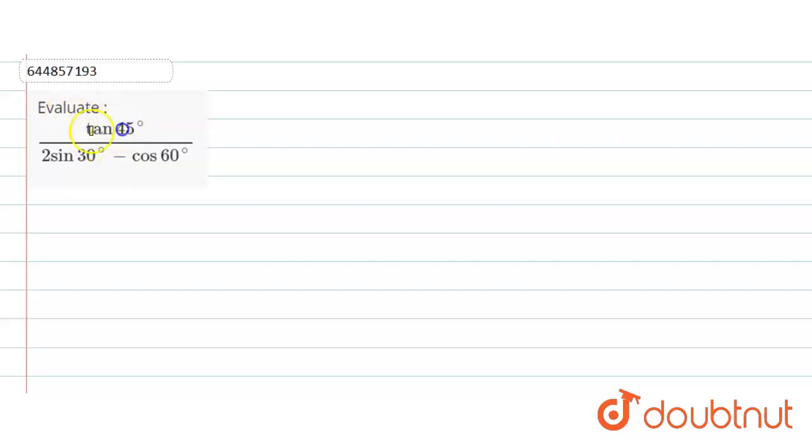Evaluate tan 45 degree divided by 2 sine 30 degree minus cos 60 degree. Now let's come to our solution. So here we have to find the value of tan 45 degree divided by 2 sine 30 degree minus cos 60 degree.